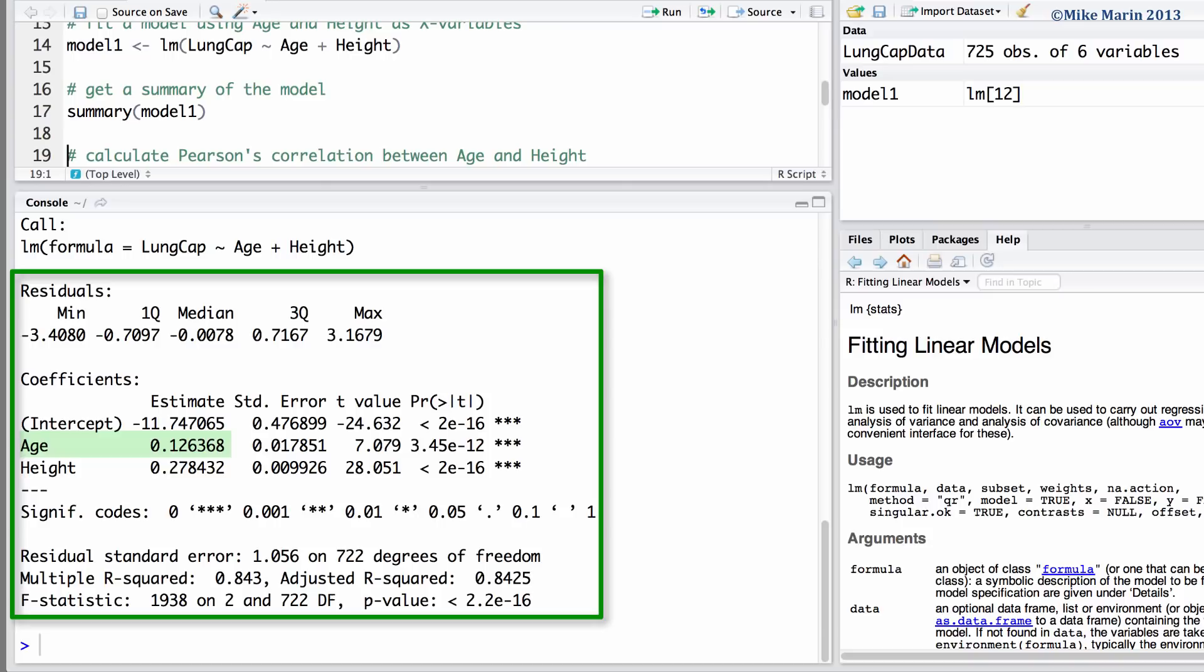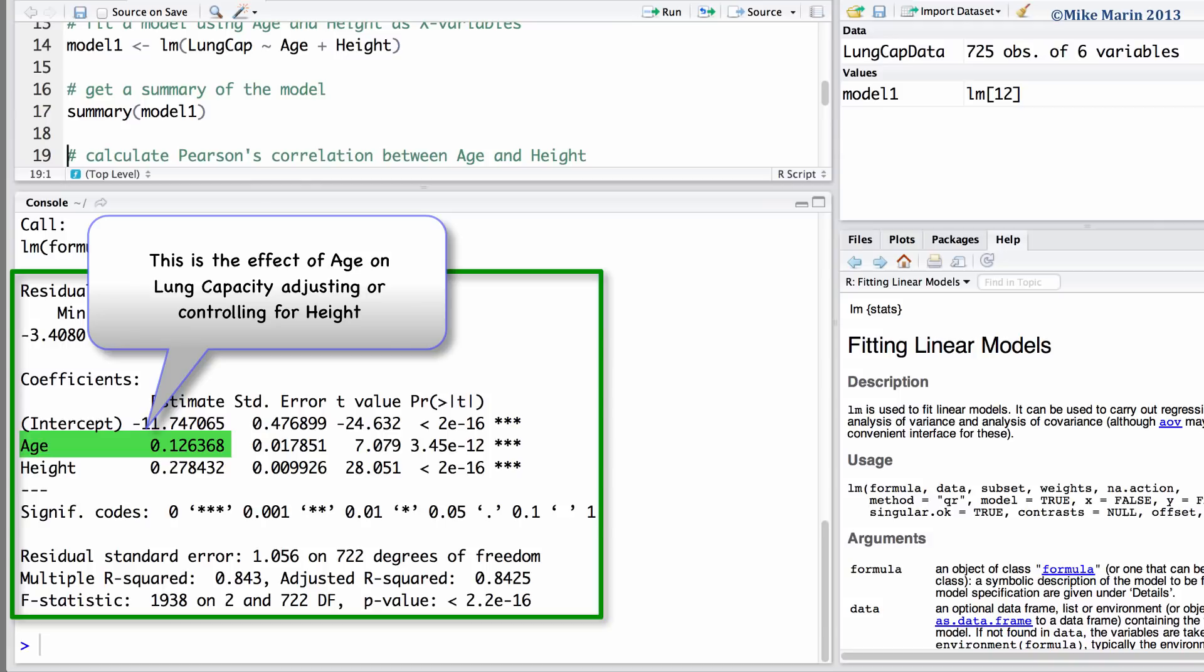We can see that the slope for age is 0.126. This is the effect of age on lung capacity, adjusting or controlling for height. We associate an increase of 1 year in age with an increase of 0.126 in lung capacity, adjusting or controlling for the height.